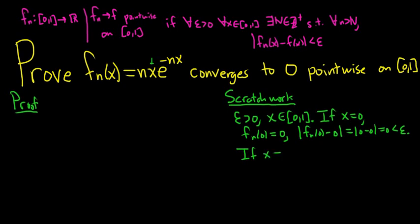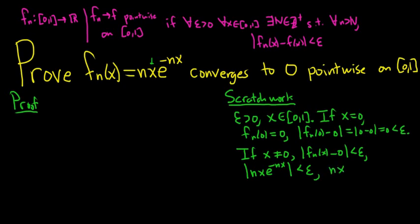If x is not equal to 0, we look at the difference f sub n of x and 0, and we want this to be less than epsilon. This can be written as the absolute value of nx times e to the negative nx, and we want that to be less than epsilon. Since x is in (0, 1], we can drop the absolute value because x is positive. So this becomes nx over e to the nx, and we want this to be less than epsilon.